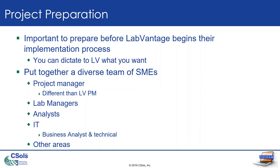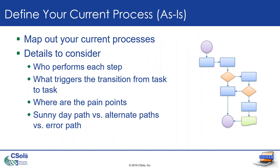You should also document your current processes, whether you are currently doing everything in paper notebooks or you have a current LIMS system. Identify what must happen in the current process for a transition to occur — for example, before testing of a sample can occur, maybe a manager has to assign the sample to an analyst before they can start testing. Also take note of the pain points you experience in your current processes. These are the parts of the process that don't work well for your organization — and they represent opportunities to improve upon later in the implementation process.